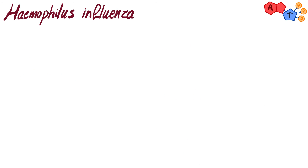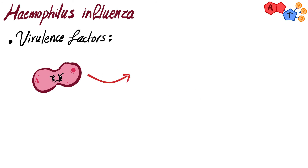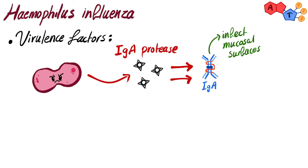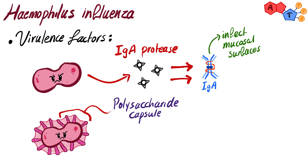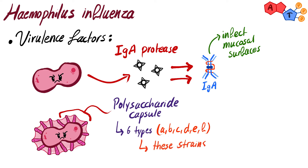Now let's talk about the virulence factors. Haemophilus influenzae uses IgA protease to infect mucosal surfaces by breaking down immunoglobulin A. In addition, some strains have a polysaccharide capsule, which can be one of six types: A, B, C, D, E, and F. These strains, particularly type B, are more invasive than non-encapsulated strains.